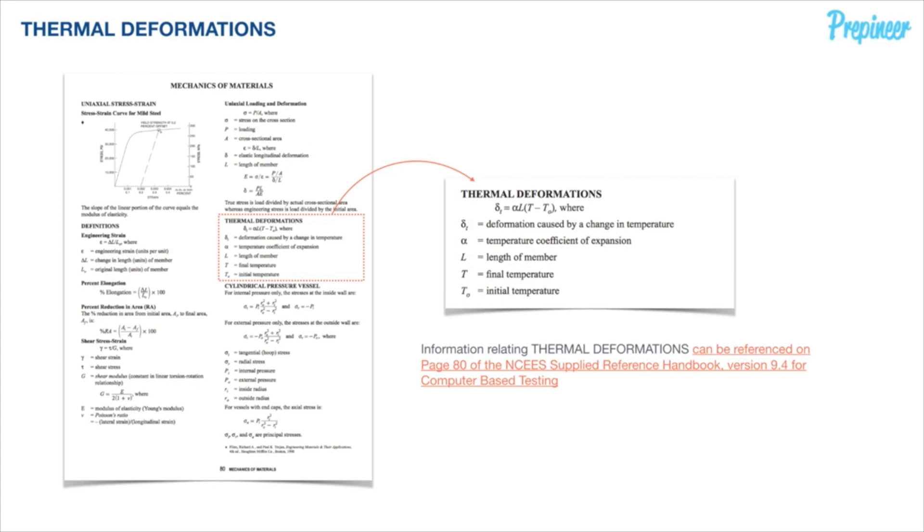This will be our primary formula we will start all of our problems with. If we have some object or member of length L which is taken through some thermal cycle where the temperature changes from T naught to T,